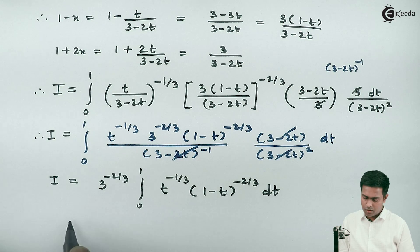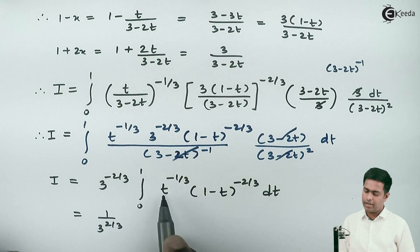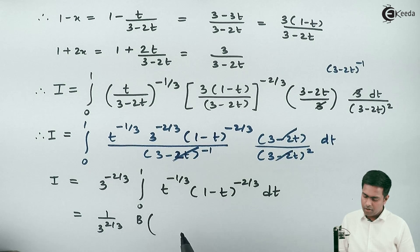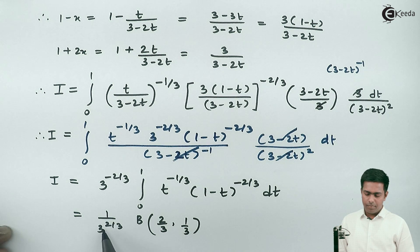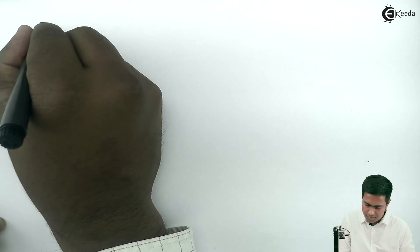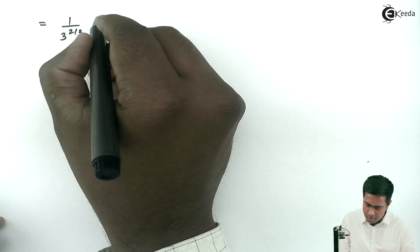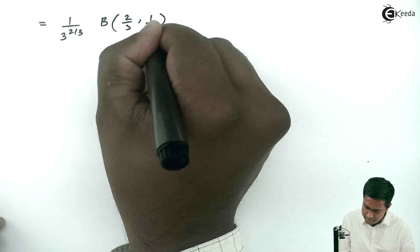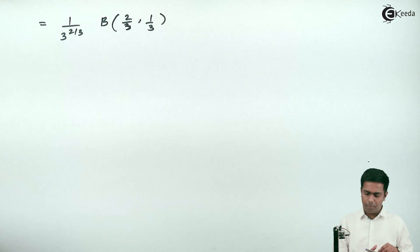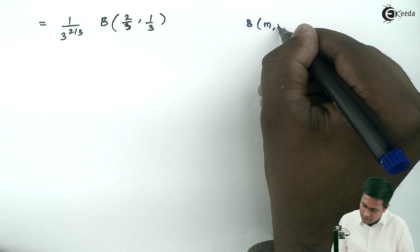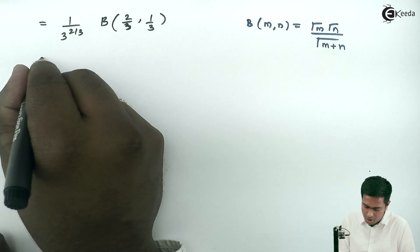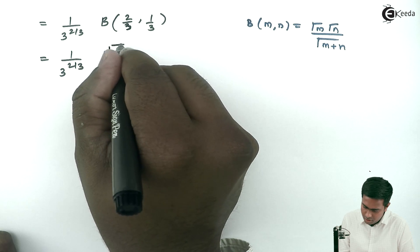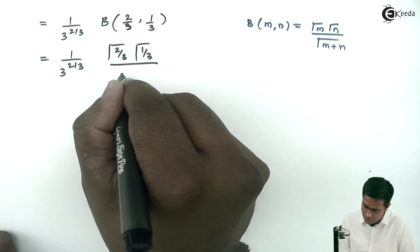This gives 1/(3 raised to 2/3) times the beta function definition, which is Beta(2/3, 1/3). Applying the property Beta(m, n) equals Γ(m)Γ(n)/Γ(m plus n), we get 1/(3 raised to 2/3) times Γ(2/3) times Γ(1/3) divided by Γ(1).